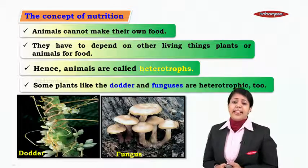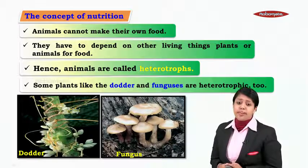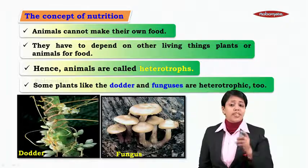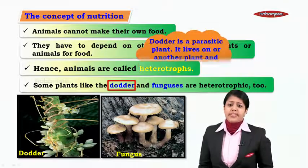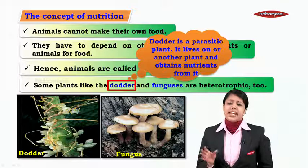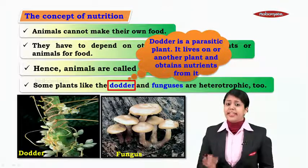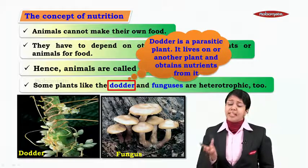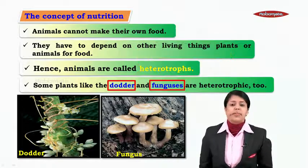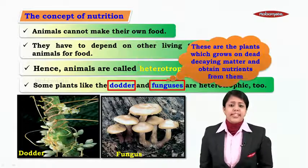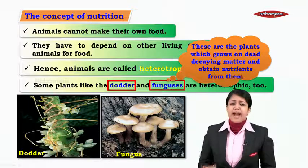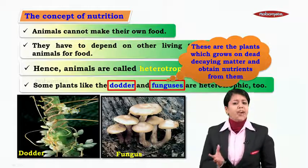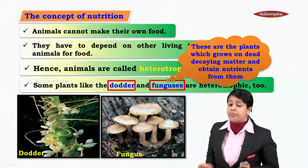Now some plants like dodder and fungi are heterotrophic too. Dodder is a parasitic plant — it lives on other plants and obtains nutrition from them. Fungi are plants which grow on dead and decaying matter and obtain nutrients from them.